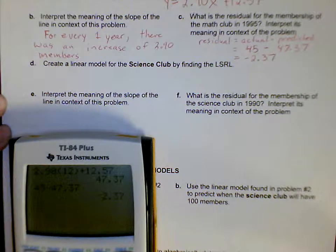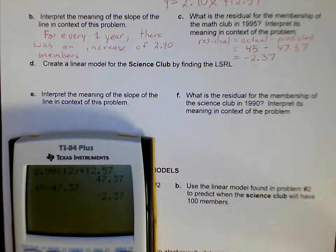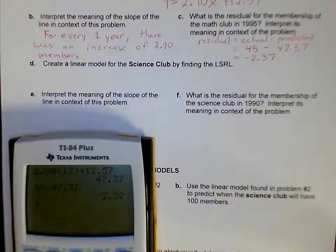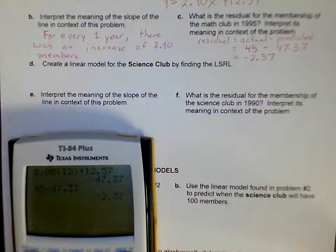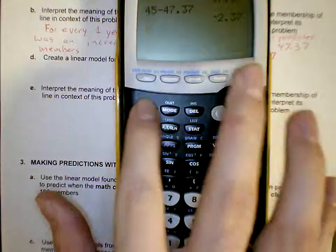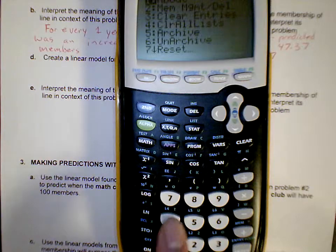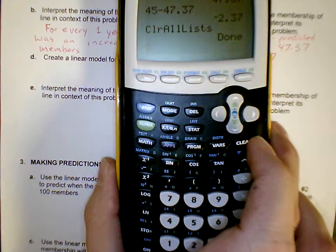All right, so we are on question D, create a linear model for the Science Club by finding the LSRL. So we have all brand new data, so we're going to want to do step 7 on your directions and clear all lists. So in order to do that, I'm going to hit 2nd plus 4 enter. And you can see it says clear all lists done.